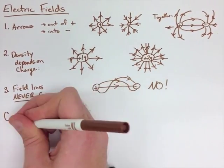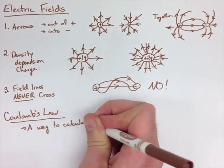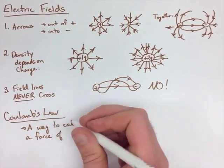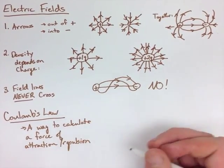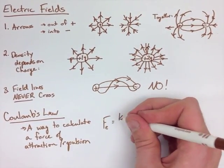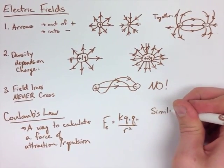The last thing we're going to look at with electric fields is called Coulomb's Law. Now, this is a way to calculate a force of attraction or repulsion caused by charges.